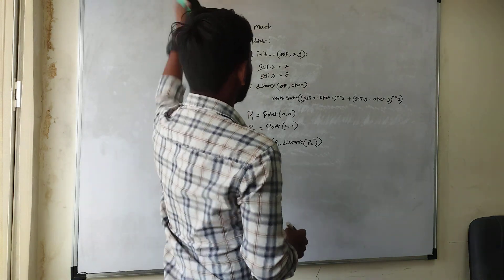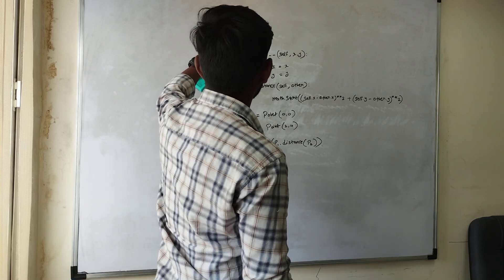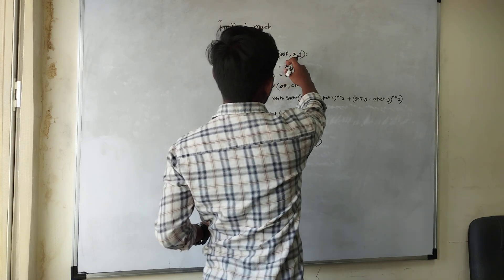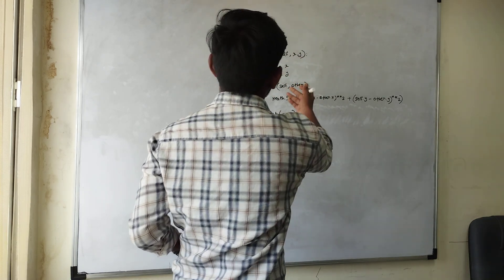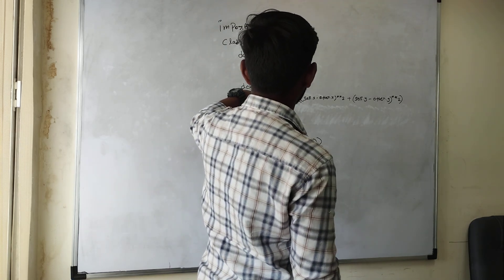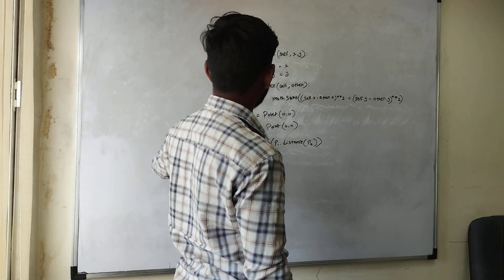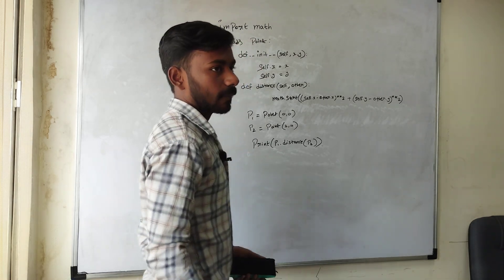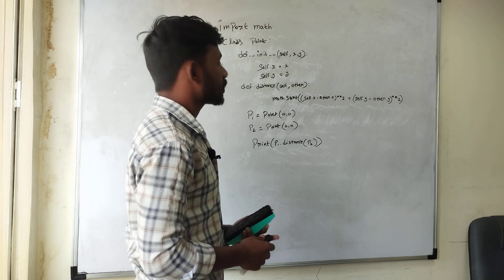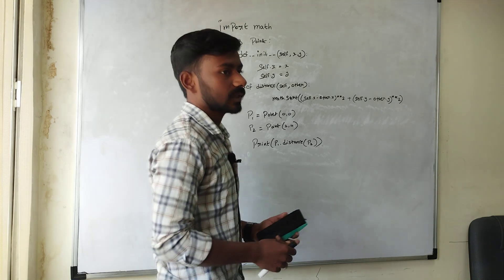To use a square root we use import math. Then we define a class Point, and use the __init__ constructor with self as the default parameter, taking two objects x and y converting them to self.x and self.y so they are accessible globally. Then we define a distance method using math.sqrt of (self.x minus other.x) squared plus (self.y minus other.y) squared. The instances are P1 (self) and P2 (other). Can we use self and self too? Yes sir, we can use self.